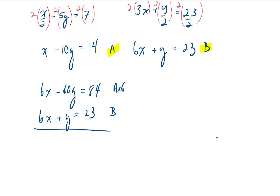I end up with 0x's, negative 60 minus y equals negative 61y. And 84 minus 23 equals 61. Dividing both sides by negative 61 tells me that y equals negative 1.